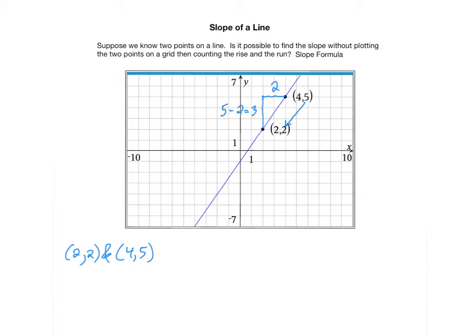And then the horizontal distance, which we counted as a distance of 2, is precisely the difference between the x coordinates of these two points. So 4 and 2, the difference with that is 2. So if we take 4 minus 2, that gives us this distance.